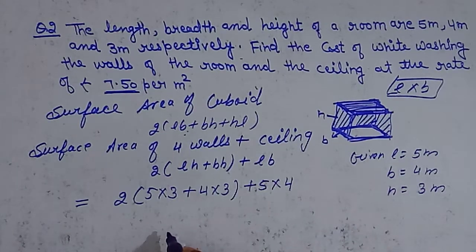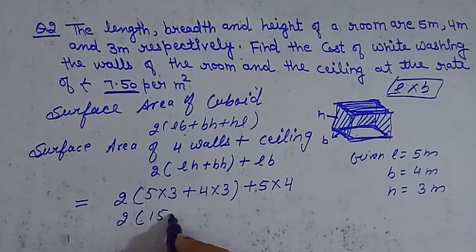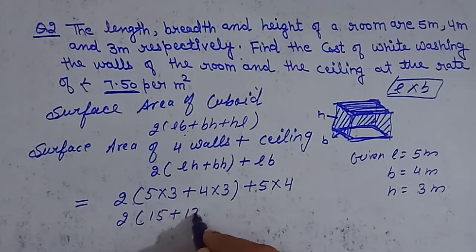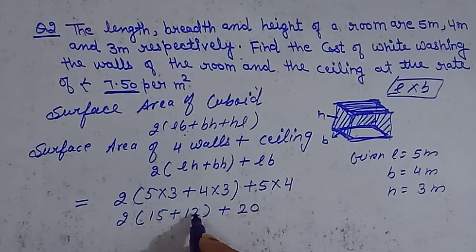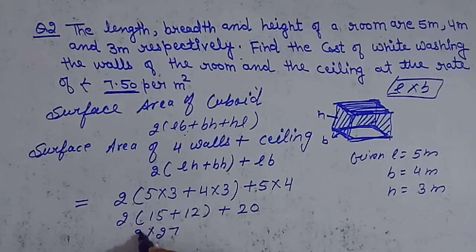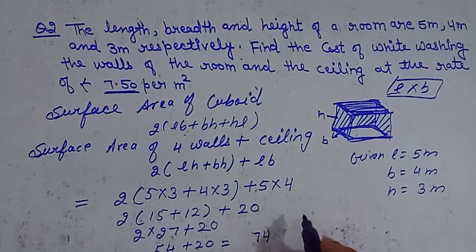Solving the problem: 2 into (15 + 12) + 20 = 2 into 27 + 20 = 54 + 20 = 74 meter square.